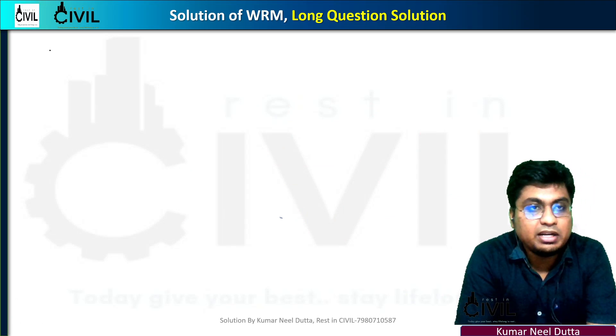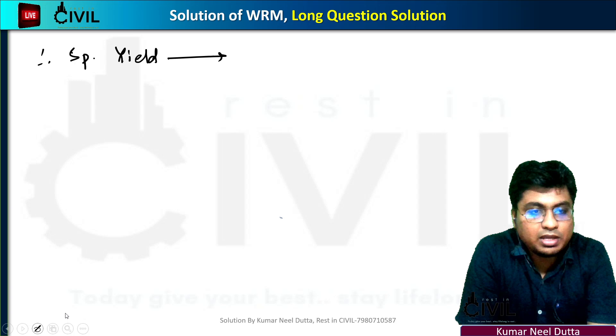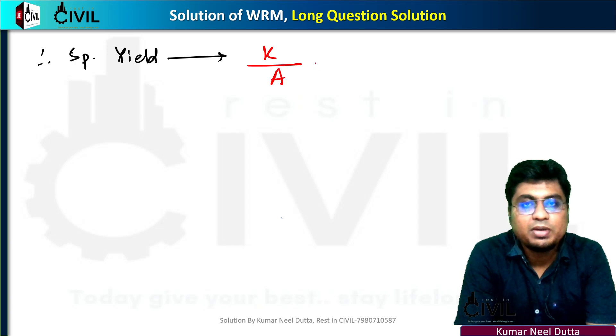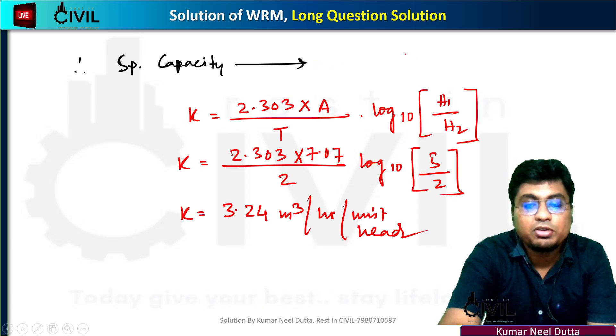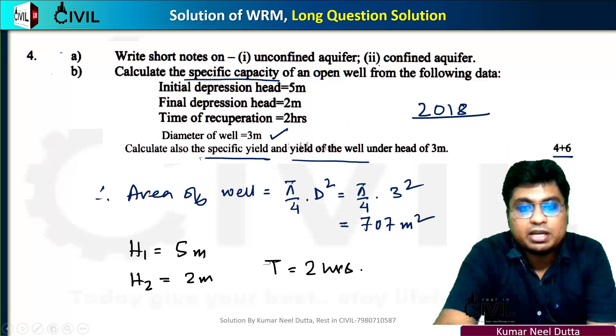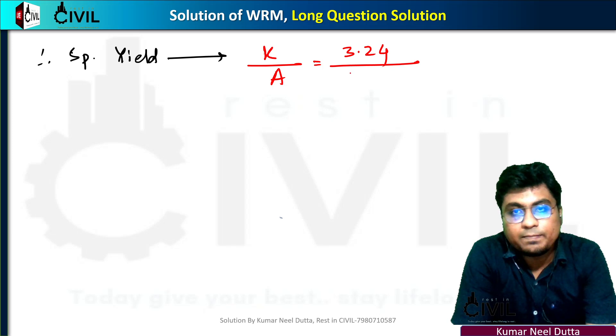Now calculate specific yield. The formula is specific yield equals specific capacity divided by area of the well. So specific yield equals 3.24 divided by 7.07.